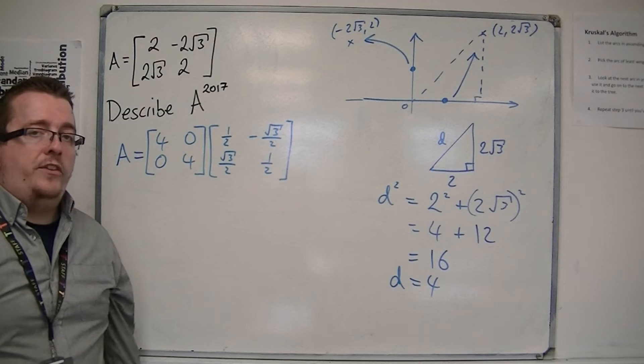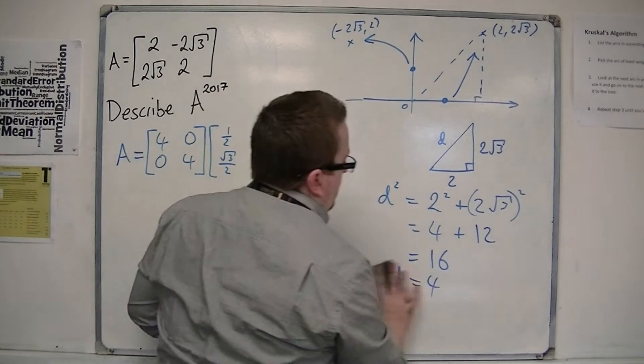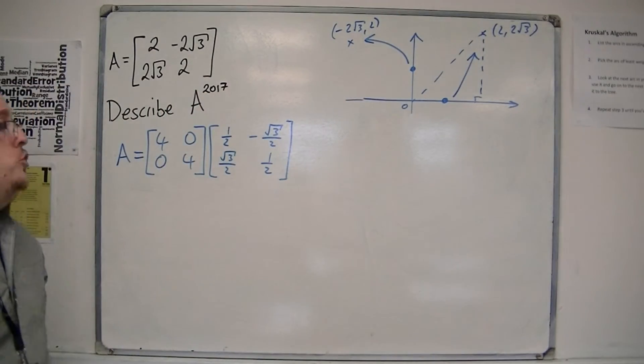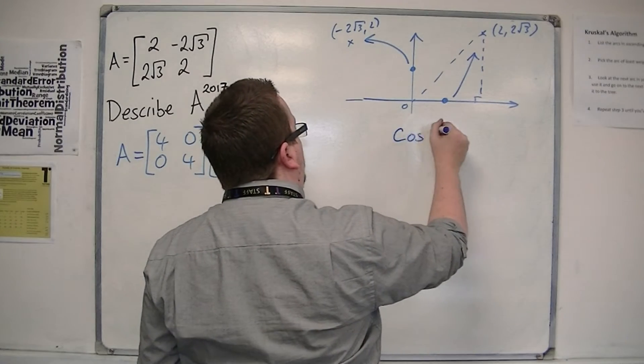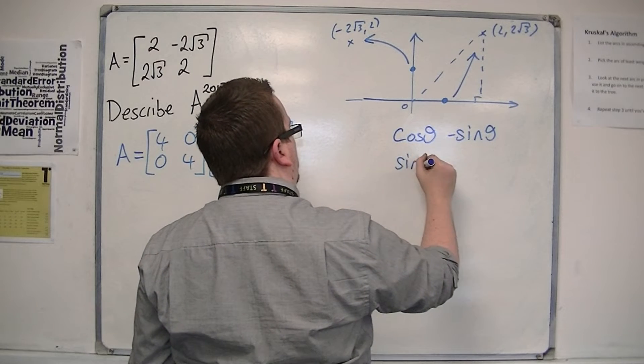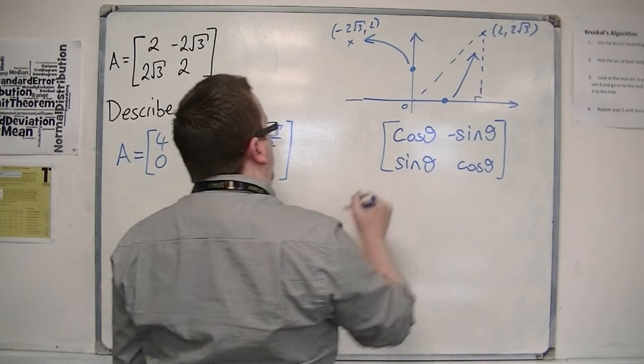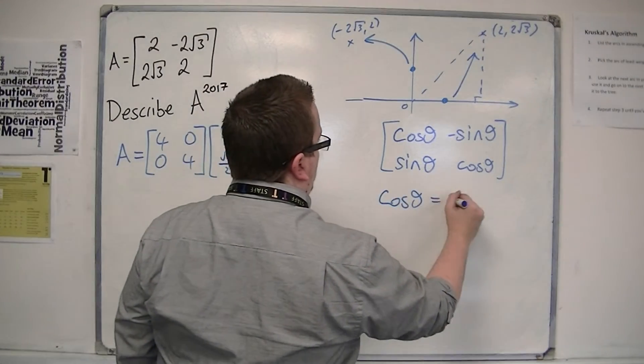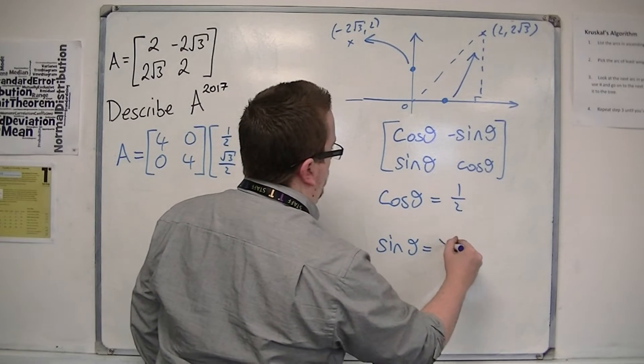Now I need to determine what that matrix is. Now I've already spotted, through my diagram, that it should be a rotation. So if I compare that with the rotation matrix, then that means that cos theta is 1 half, and sin theta is equal to root 3 over 2.